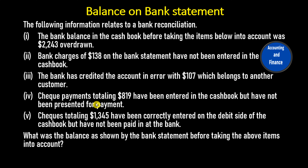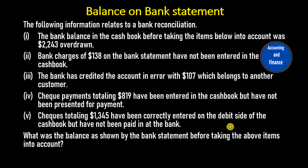Check payments totaling $819 have been entered in the cash book but have not been presented for payment. Checks totaling $1,345 have been correctly entered on the debit side of the cash book, but have not been paid in at the bank.